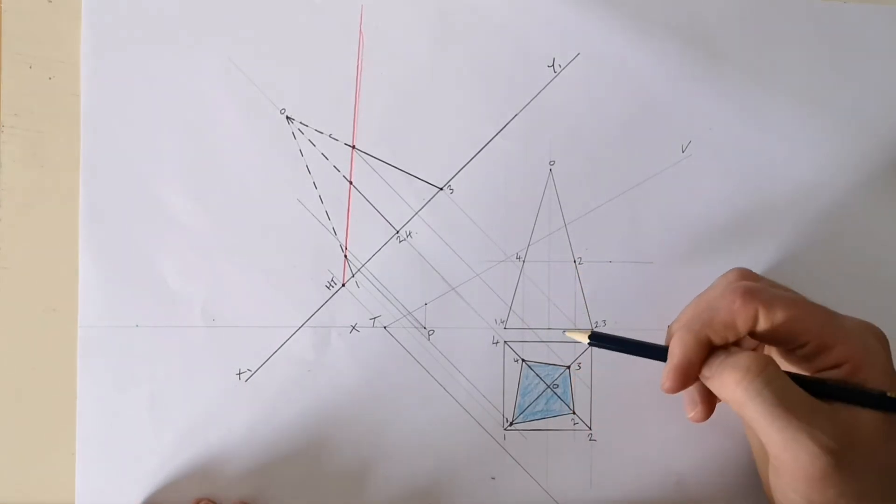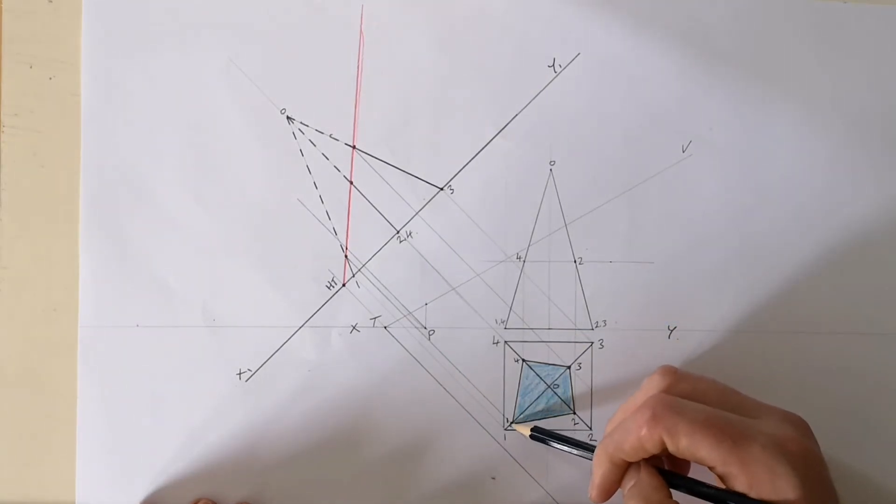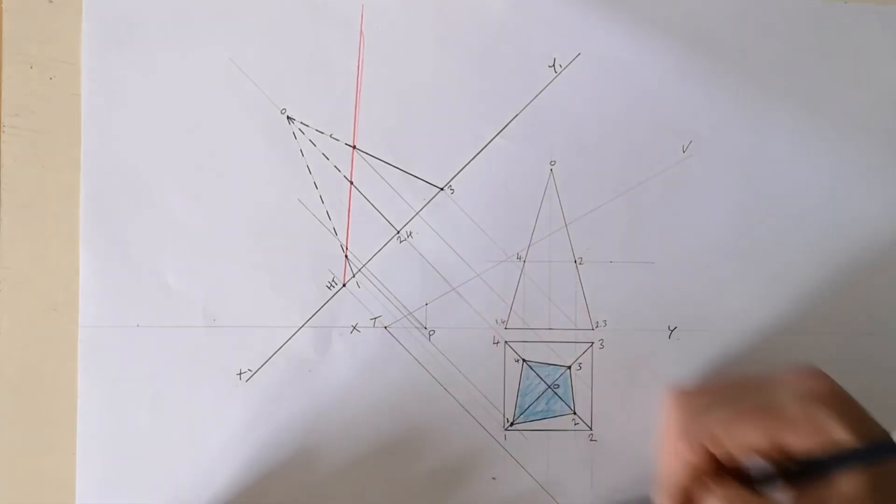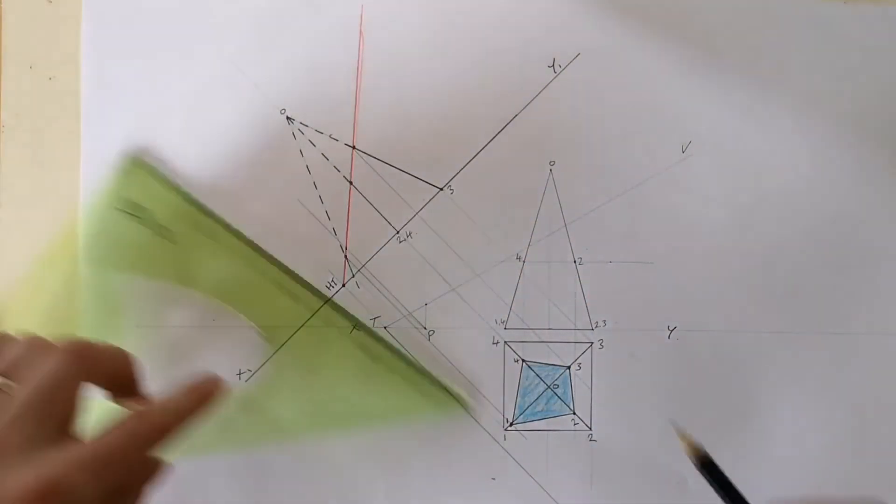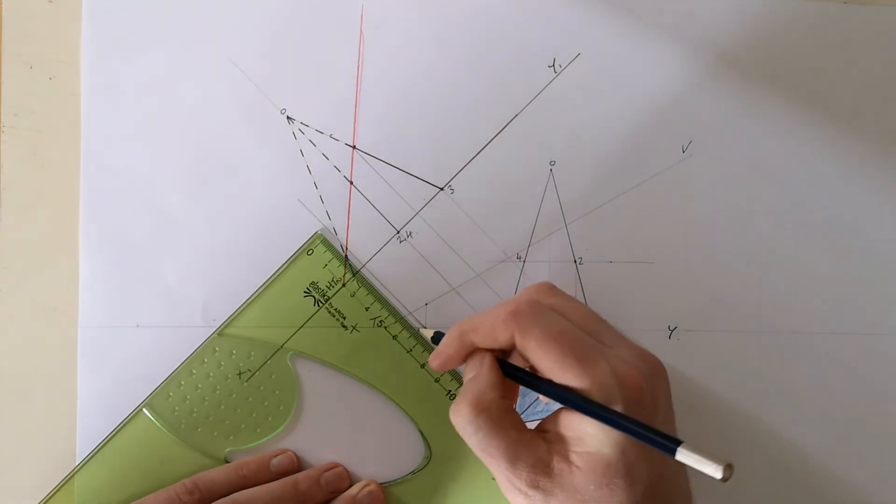So how do I do that? As before, the same thing as what we've done before. From point one, you take it back up at 45 degrees, which is parallel to the HT line.